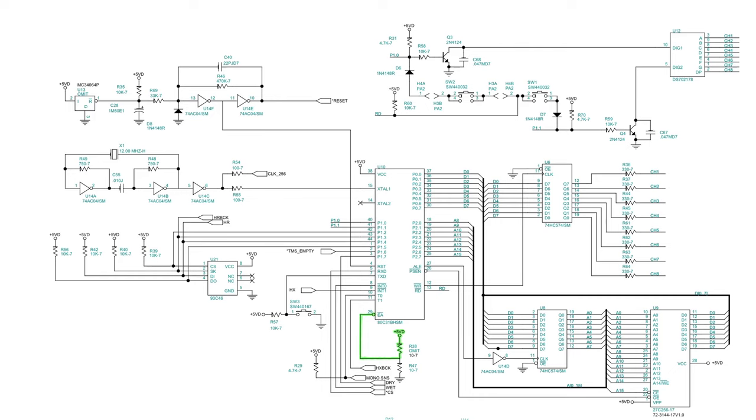For pedals with external EEPROMs, resistor R47 is installed, and EA is pulled down to 0 volts.